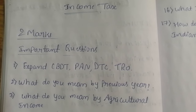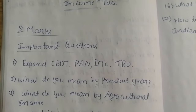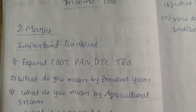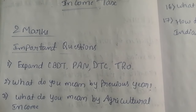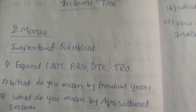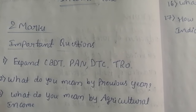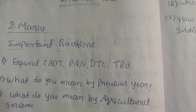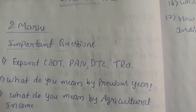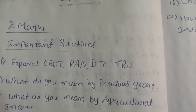Hi friends, in this video let us see today 57b.com income tax subject two most important questions. First question: expand CBDT — Central Board of Direct Tax. PAN — Permanent Account Number. DTC — Direct Tax Code. TRO — Tax Recovery Officer.